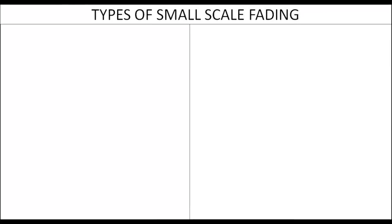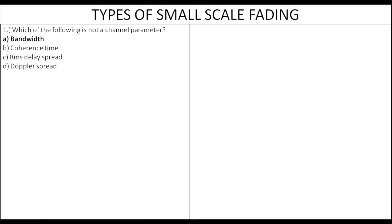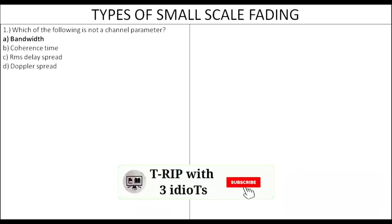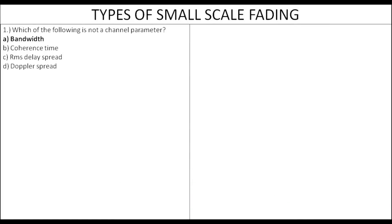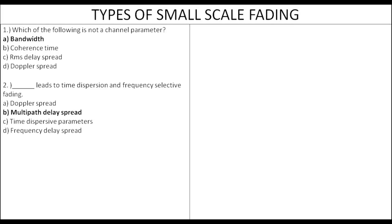Types of small scale fading: coherence time, RMS delay, and Doppler spread are channel parameters, whereas bandwidth and symbol period are signal parameters. Multipath delay spread leads to flat fading and frequency selective fading. Doppler spread leads to fast fading and slow fading.